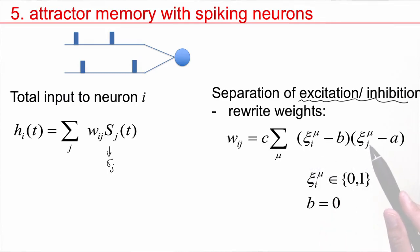Note here that weights can be positive or negative. If I have a c_j^mu equal to 1, I have a positive term here. If I have a c_j^mu equal to 0, I have a negative term. This is true even if I set the constant b equal to 0. I would still have positive and negative weights, which is biologically not plausible, because in biology, neurons that send out positive weights are called excitatory neurons. These are different neurons than those that send out negative weights, which are called inhibitory neurons.